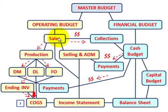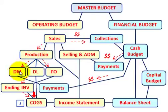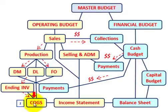With our operating budget, the first budget we have to prepare is the sales budget. Knowing our sales budget, we can prepare our production budget and our selling and administrative budget. After we prepare our production budget, we can prepare our direct materials budget, direct labor budget, and factory overhead budget. After those, we prepare our ending inventory budget, and then we get down to the cost of goods sold budget.